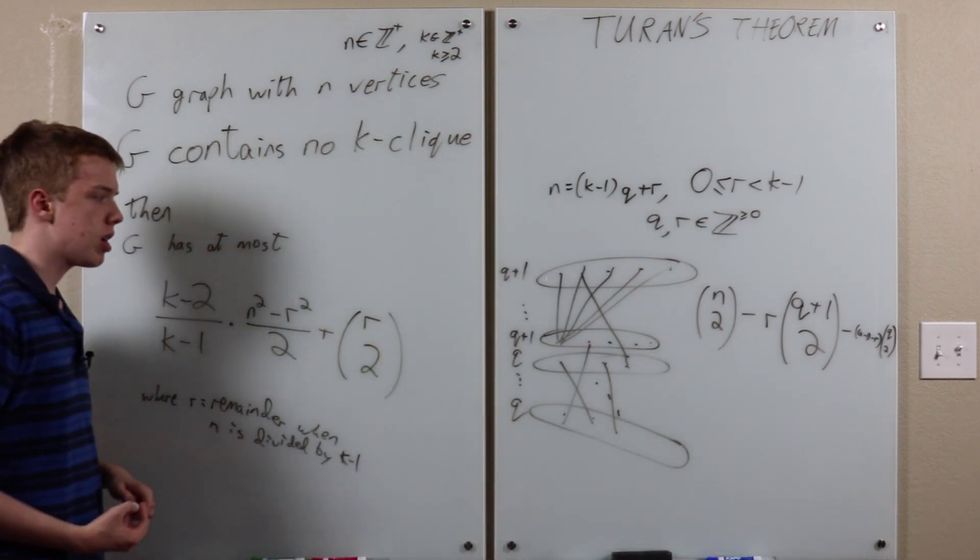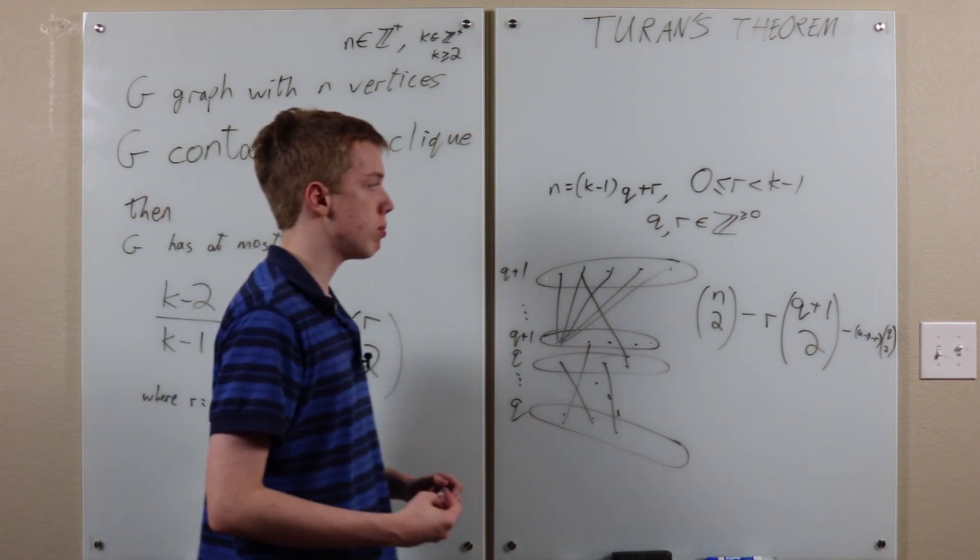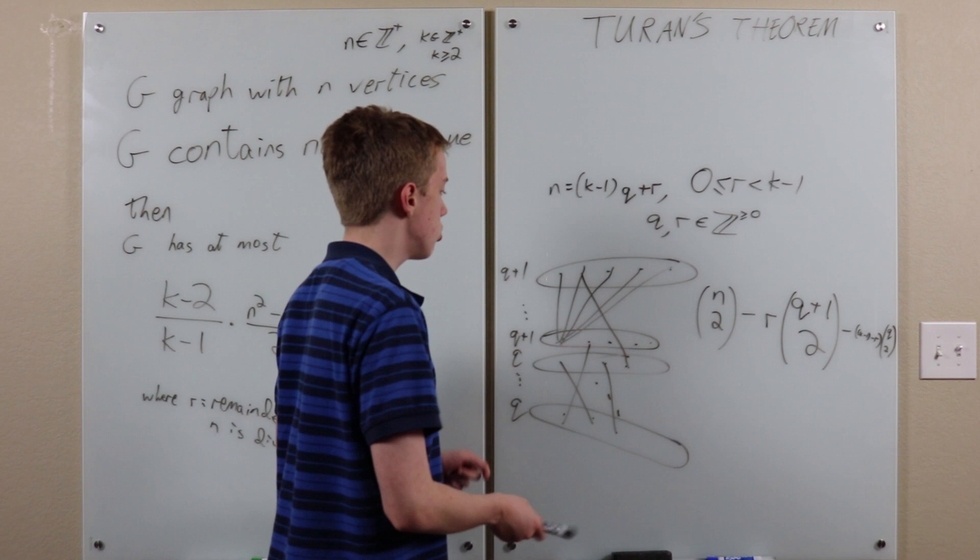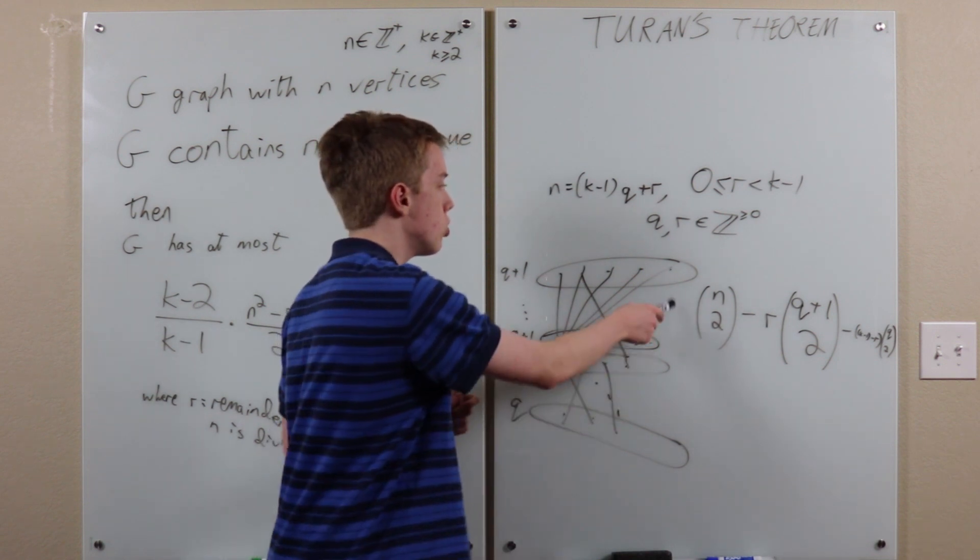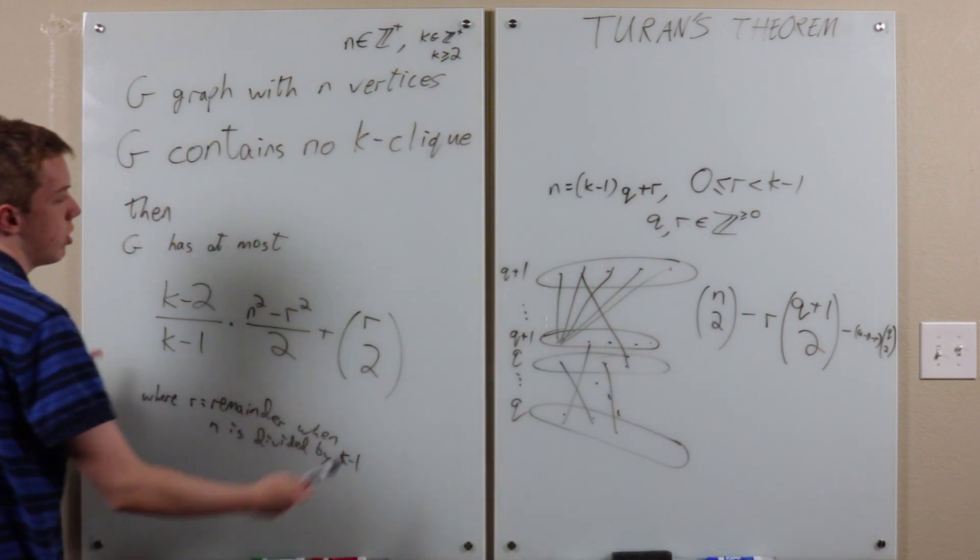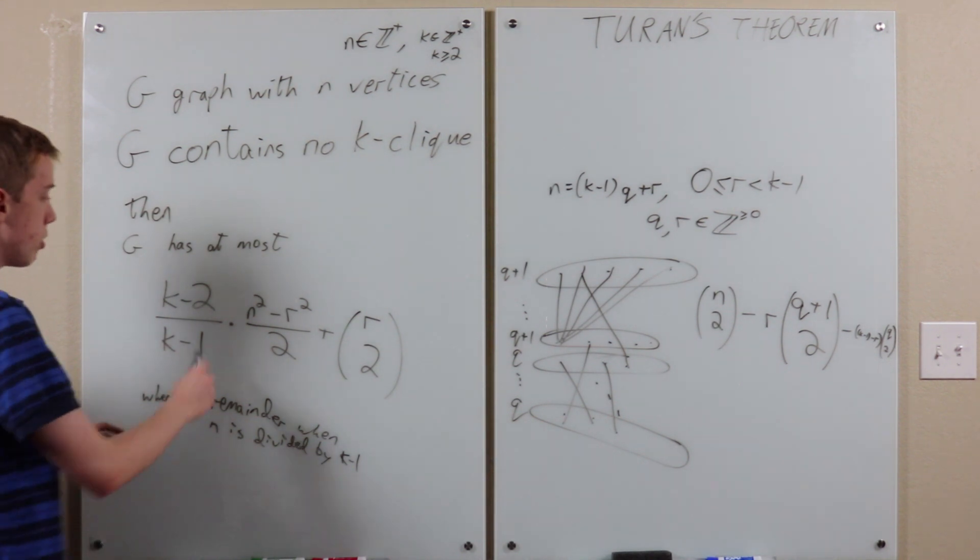This is one of those times when the actual bound isn't so important as the construction giving the bound. So sort of intuitively, we want groups that are equal sized as possible. It doesn't really matter what the actual answer is. Now, how do we prove this theorem?